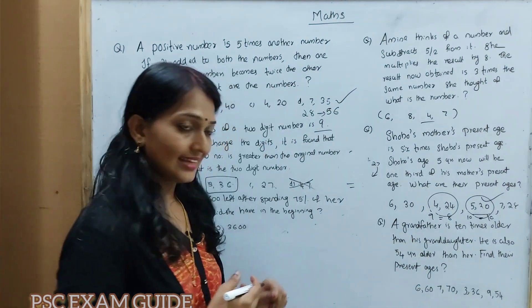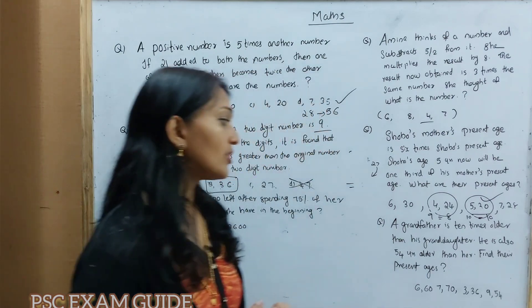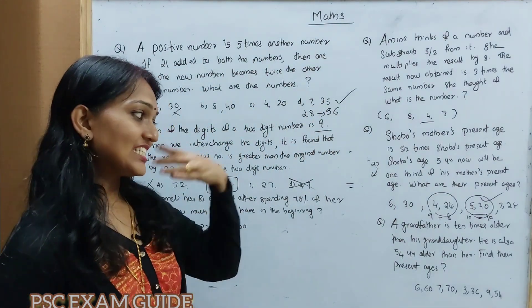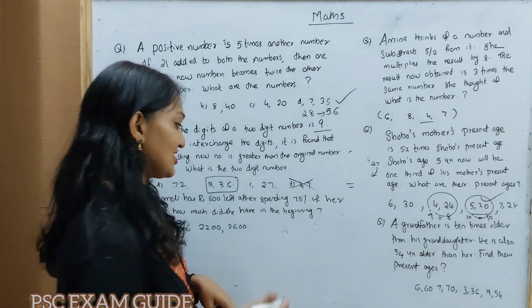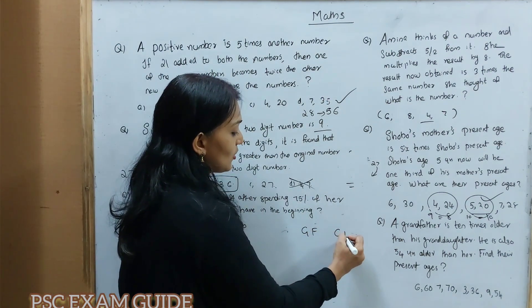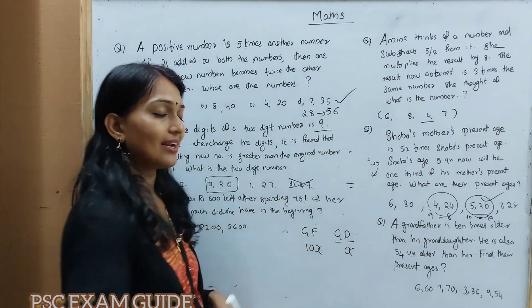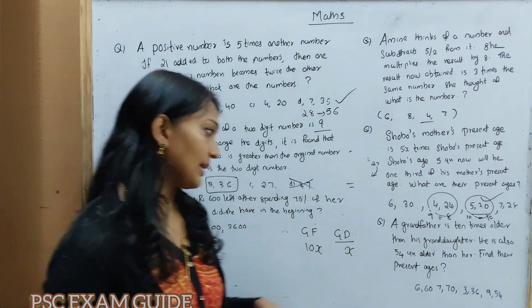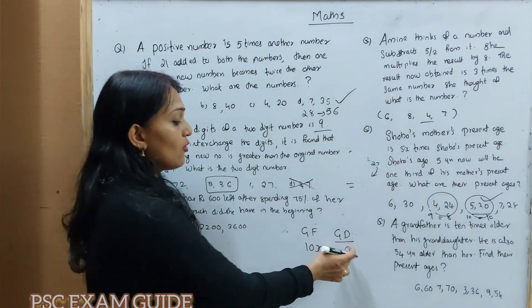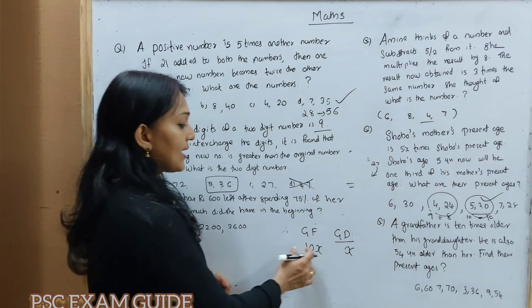Last question: A grandfather is 10 times older than his granddaughter. He is also 54 years older than her. What are their ages?